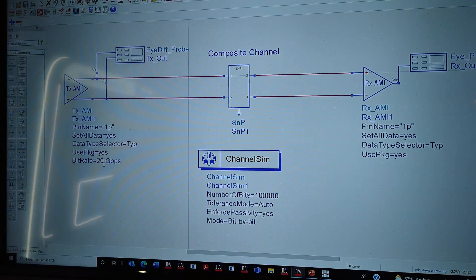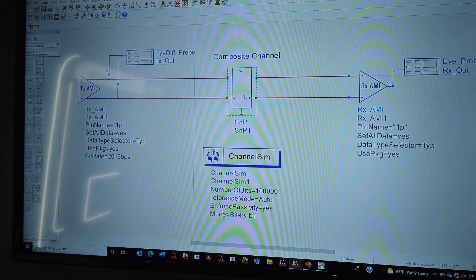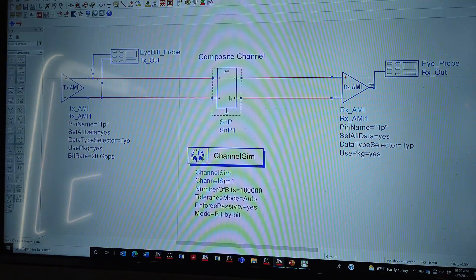which is the data rate for USB 4 Gen 3. We have a composite channel that represents the behavior of the channel used. This is an S-parameter used for the simulation.